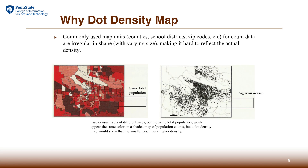If you have count data on regular or irregular shapes, the dot density map also brings something new to the table. For example, we could show population by census tracts as a count, and some small tracts may have the same number of people as larger tracts. If shown by count, they display the same color. However, they are different in terms of density. By doing a dot density map, you can bring that difference into visual form — it becomes very obvious that the smaller tracts have higher density than the larger tracts.